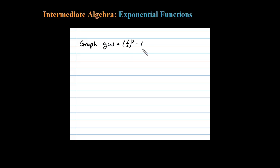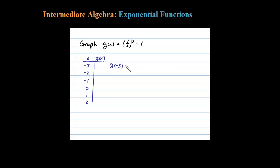Here we're asked to graph this exponential function. There are a number of ways to do that, but in this section we're going to choose to graph this by plotting points. X is the independent variable, so we're going to choose some negative values for X and some positive values for X. So G of negative 3 in this case would be one-half to the negative 3 power.